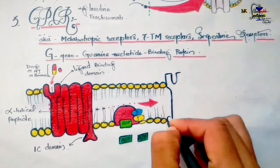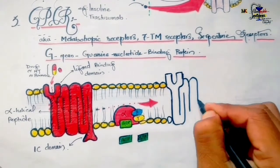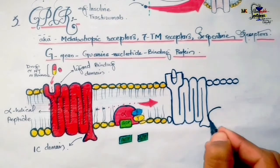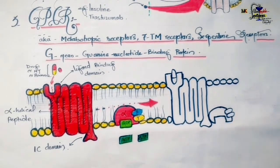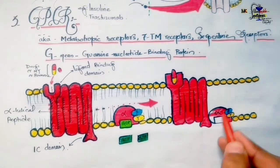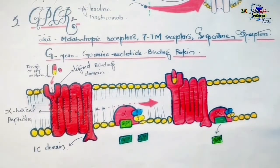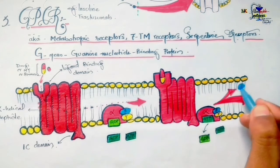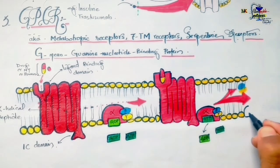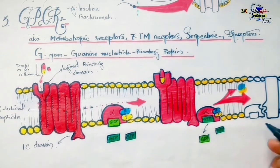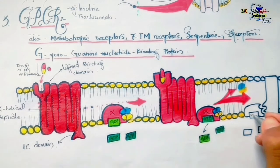Upon binding of a ligand to the receptor, conformational changes occur, creating affinity between the receptor and the G-protein. GDP dissociates from the alpha subunit and is replaced by GTP, which is present at higher concentration in the cell. This high-energy GTP-bound G-protein then dissociates from the receptor; the beta and gamma subunits form a dimer, while the alpha subunit bound to GTP interacts with effector molecules to produce second messengers intracellularly.